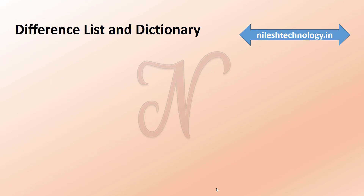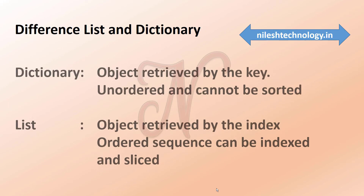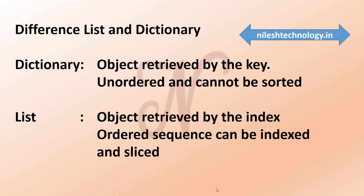The difference between a list and a dictionary: dictionary objects are retrieved by key name — they are unordered and cannot be sorted. A good time to use a dictionary is when you want to quickly retrieve a value without needing to know its exact index location; you just need to know the key. In a list, objects are retrieved by location or indexed order and can be indexed or sliced. Compared to a list, grabbing something from a dictionary is very quick.